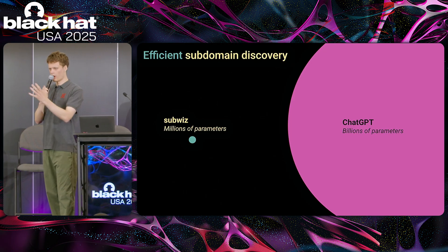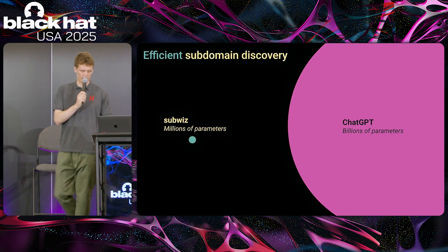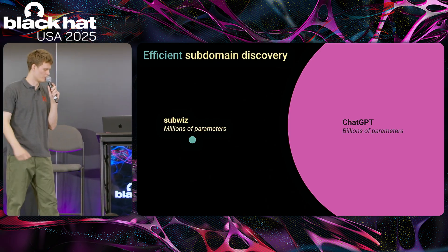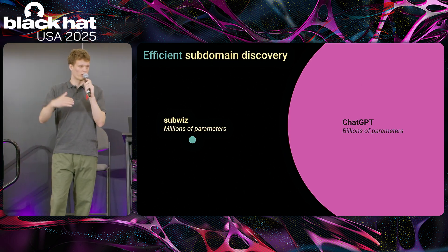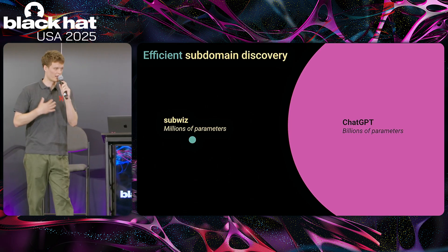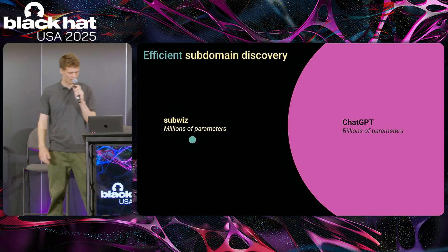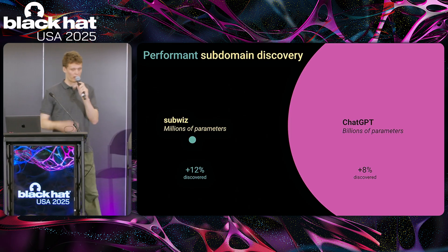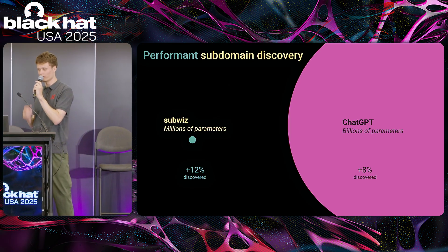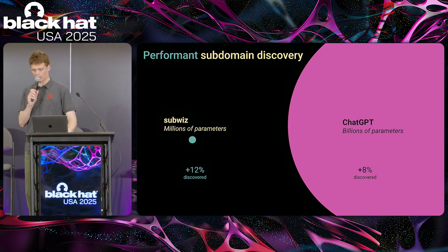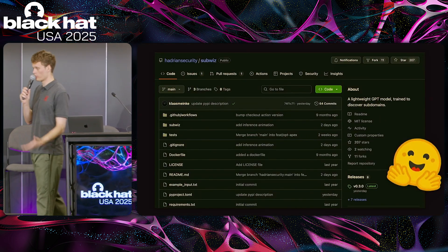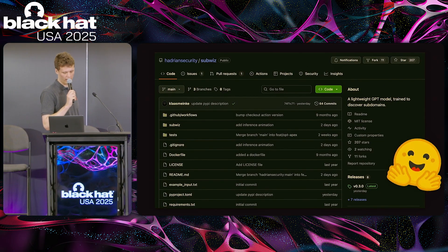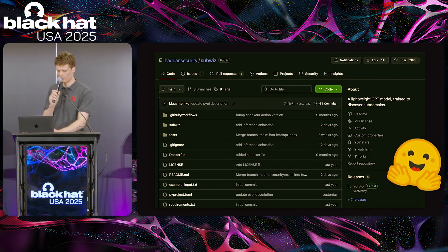Going deeper into the sense phase — one thing we do is efficient subdomain discovery. We've actually developed our own GPT model for this. You can see the scale of it: it's much, much smaller than ChatGPT — three orders of magnitude, about 1,000 times smaller — which is important because we're running millions of scans every single day. Because it's trained for such a specific purpose, we see 12% more subdomains discovered using SubWiz compared to a fine-tuned version of ChatGPT, which gets 8% more. It's so lightweight that it can easily run on consumer hardware, so we open sourced it for bug bounty hunters and ethical hackers, releasing weights on Hugging Face and a tool on GitHub.